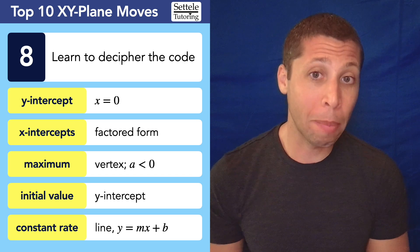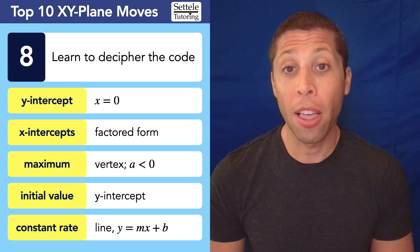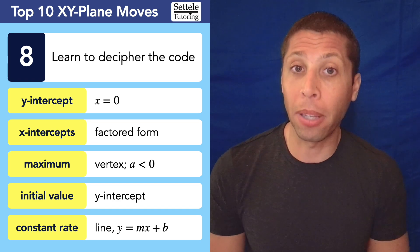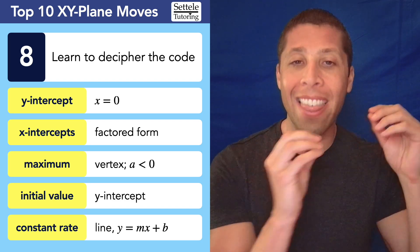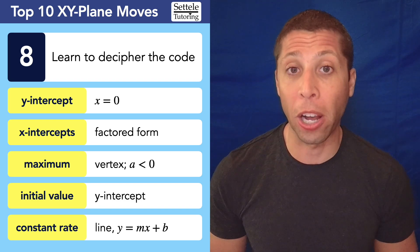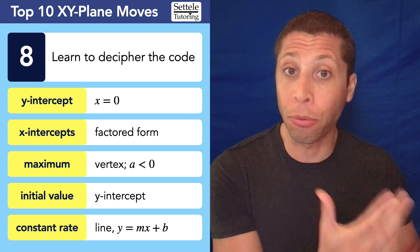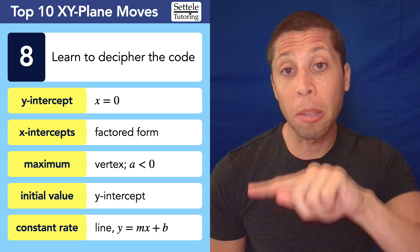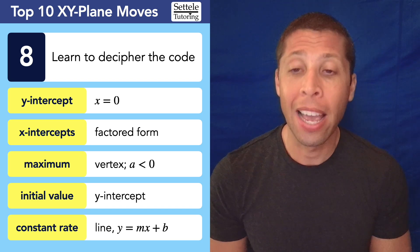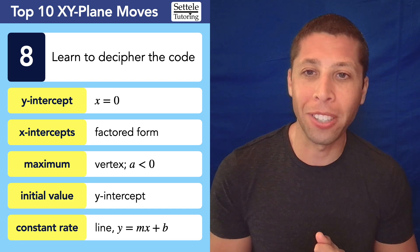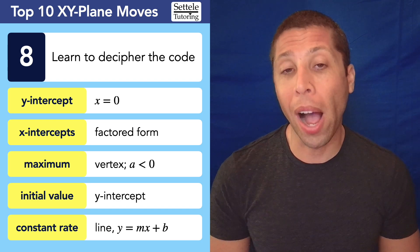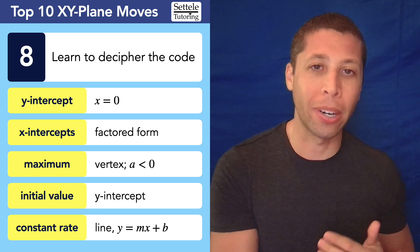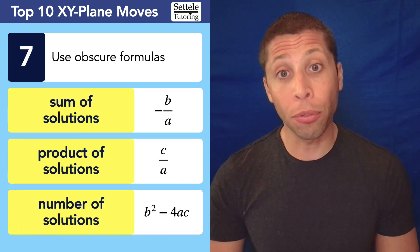Number 8: a lot of times the SAT talks about those equations in code and we need to decipher it. If they mention a y-intercept, I know I'm probably going to plug in zero for x. If they talk about x-intercepts, I'm probably going to write a factored form equation. If they mention a maximum, I know I'm dealing with a vertex and that the a-value is less than zero — the parabola opens downward. If a story problem mentions an initial value, I'm thinking y-intercepts; a constant rate means I'm writing y equals mx plus b.